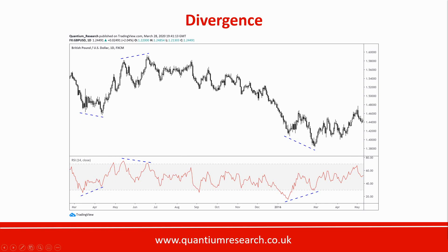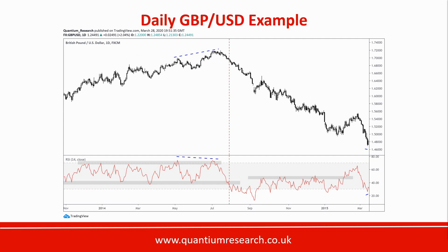Bearish divergence is the opposite: you get a higher high in price but the RSI fails to make a higher high, meaning the uptrend has run out of steam. You can see here a higher high in price but lower highs on the RSI — that is bearish divergence — followed by a continuation to the downside. With the bullish divergence example, price broke out to a higher range after the pattern; post bearish divergence, we saw a continuation to the downside.